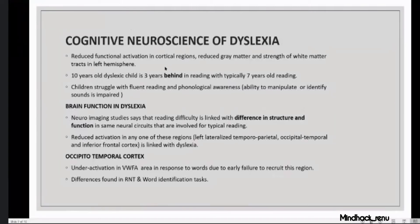In the cognitive neuroscience of dyslexia, before we saw increased activation in the temporoparietal and occipitotemporal regions — but in dyslexia there is decreased functional activation seen in fMRI. There are also structural differences: reduced gray matter, and reduced strength of white matter. A 10-year-old with dyslexia will be at least three years behind in reading ability compared to typical readers, often struggling with fluent reading and phonological awareness.